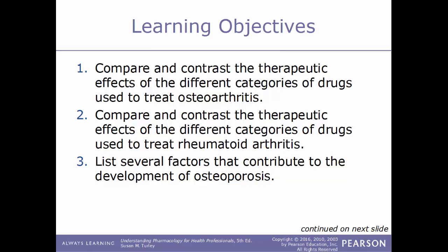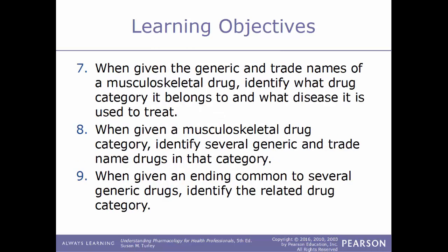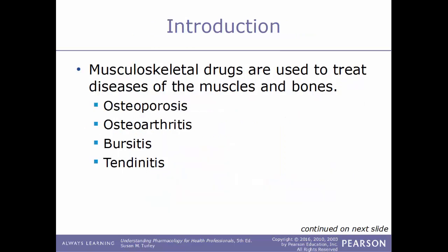List several factors that contribute to the development of osteoporosis. Describe the therapeutic effects of the different categories of drugs used to treat osteoporosis, and the therapeutic effects of skeletal muscle relaxant drugs and drugs used to treat fibromyalgia. When given the name of a musculoskeletal drug, identify its trade name, drug category, and disease treated. When given a drug category, identify several generic and trade name drugs, and identify the related drug category from a common generic drug ending.